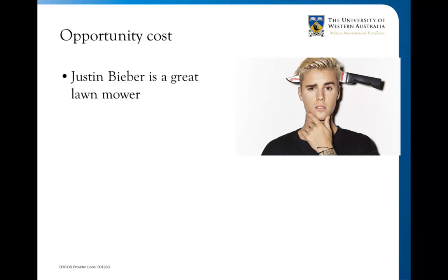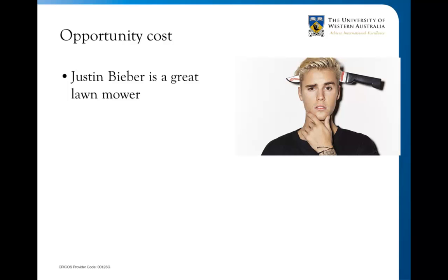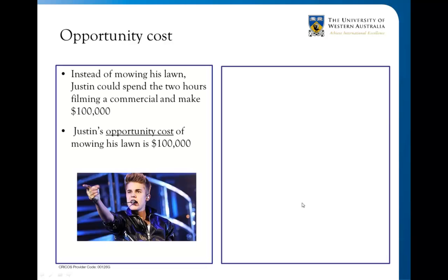So an example: we've got the Beebster. He is a great lawnmower. Here's his house — he can mow his lawn in two hours. However, in the time that it takes him to mow the lawn in two hours, he could film a commercial and make $100,000. So in other words, Justin's opportunity cost of mowing his lawn is $100,000. In the time it takes him to mow his lawn, he could have been dancing around, singing, and making $100,000. So that's his opportunity cost.